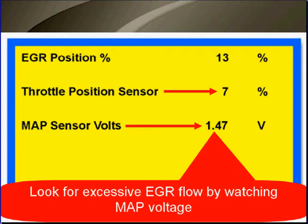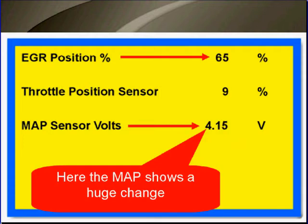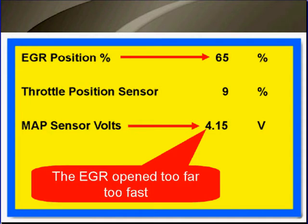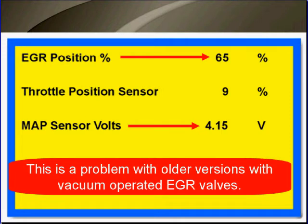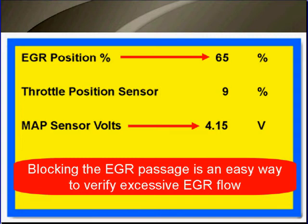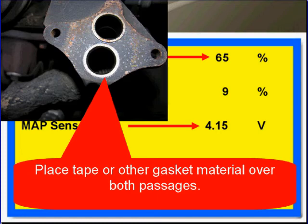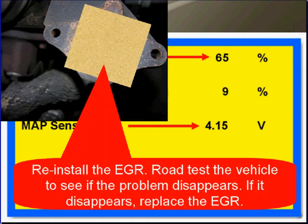Look for excessive EGR flow by watching the MAP voltage. Here the MAP shows a huge change — the EGR opened too far, too fast. This has been a problem with older versions of EGR systems, the vacuum-operated type. Blocking the EGR passage is an easy way to verify excessive EGR flow. Place tape or other gasket material over both of the large passages. Reinstall the EGR and road test the vehicle to see if the problem disappears. If it disappears, replace the EGR.